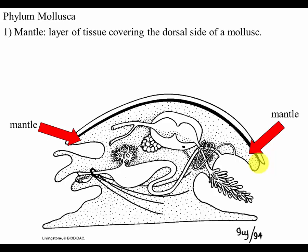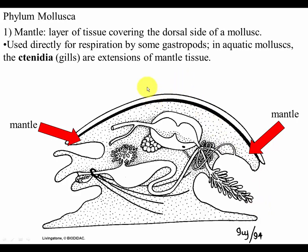If you imagine having a cape growing out of your back and wrapping it around your sides — almost like a Dracula cape — that's where the mantle is found on a mollusk. It's attached to the back but often curves down to cover the entire organism. Some organisms breathe through this tissue, in particular some gastropods. For mollusks that live underwater, their gills are usually extensions of the mantle tissue — very frilly or laminate, sheet-like structures with a large surface area used for respiration.